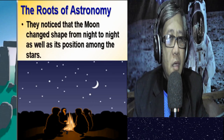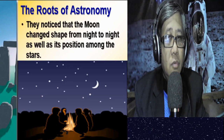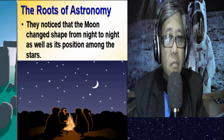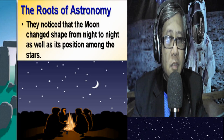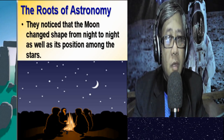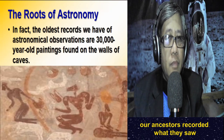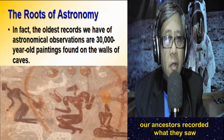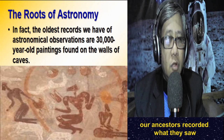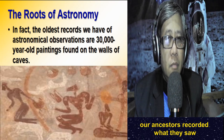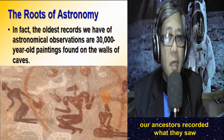They noticed that the moon changed shape from night to night, and also that the moon changes position among the background of stars. So they started observing the night sky and probably made records of what they observed. In fact, the oldest records we have of these ancient astronomical observations are 30,000-year-old paintings found on the walls of caves.